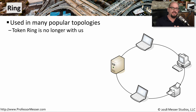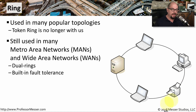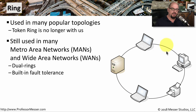Another common topology type is the ring topology, where all of the devices are connected to each other in a ring form. We used to have token ring networks as very popular local area networks, but now that those are no longer very common, you would see ring networks in metropolitan area networks and wide area networks. It's very common to see these implemented as dual ring networks, so that if there is a break, it can loop onto itself for fault tolerance and maintain the uptime of the entire ring.